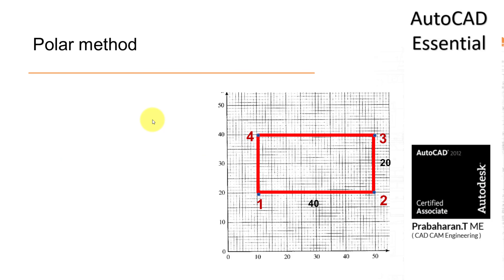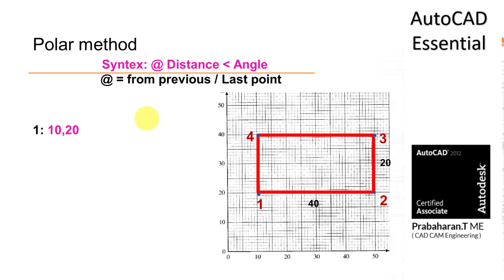Let us take the same example — a 40 mm by 20 mm rectangle. The first point is 10, 20. For the second point using polar method, the rule is at the rate of distance. From point 1, the distance to point 2 is 40 mm, and this line moves towards 0 degree. So the second point is from point 1 at the rate of 40 mm in the direction of 0 degree.